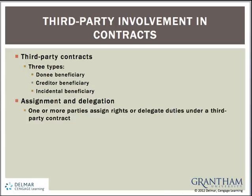Moving on, I'd like to discuss third party involvement in contracts. There are three types of third party contracts that you should be aware of. These are donee beneficiaries, creditor beneficiaries, and incidental beneficiaries. The donee beneficiary receives benefit from the contract as a gift from one of the promisors. The creditor beneficiary receives benefit from one promisor as satisfaction of an existing debt from the other promisor. The incidental beneficiary is not intended by the parties to benefit directly from the contract but receives a benefit as a side effect of the contract. A donee or creditor beneficiary can enforce the contract against the party obligated to provide the benefit, while the incidental beneficiary has no rights against either party because there was no intent to make the contract for the purpose of benefiting this party.